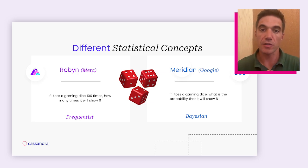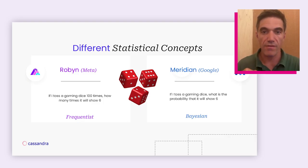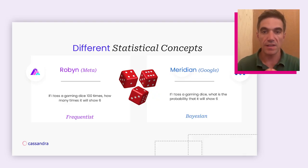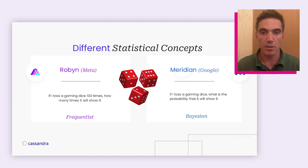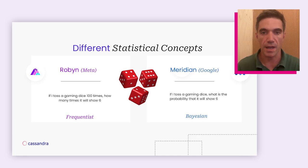Essentially, what it does is it looks at statistical data. If you were to throw a dice 100 times and record every single time what happened, a frequentist approach would count literally how many times six landed out of those 100 throws. On the other hand, a Bayesian framework will have a priori assumptions about the probability that a six will land if you were to throw the same dice 100 times.